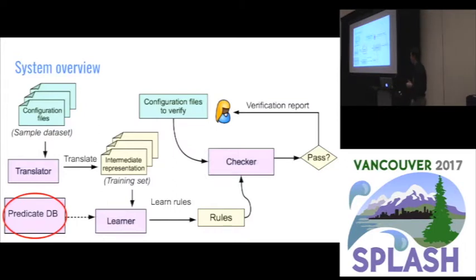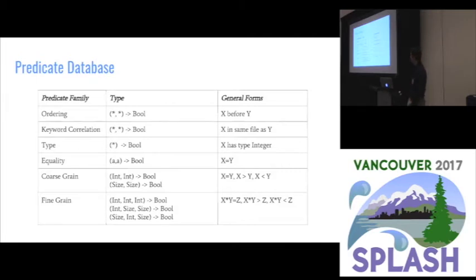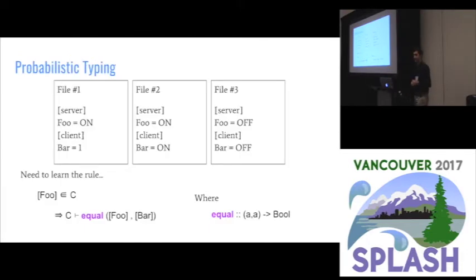Where do these predicates come from? We have a predicate database — a template database — and these are some predicates that we found to be useful in real world application. If you needed to add extra predicates, that would not be a huge task. This covers almost every configuration error we were able to find in our study. One important point is that I have some type information — for example, ordering can be over two keywords of any type, but equality is saying we can only compare two things of the same type. However, if you remember, configuration files are just plain text — we don't have type information. So in order to guide our search, we're going to introduce something called probabilistic typing.